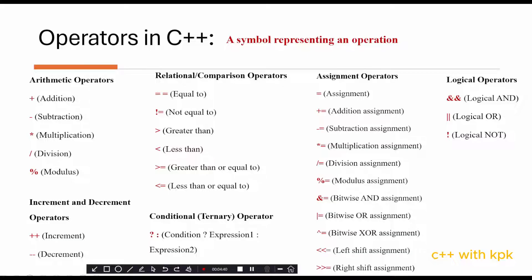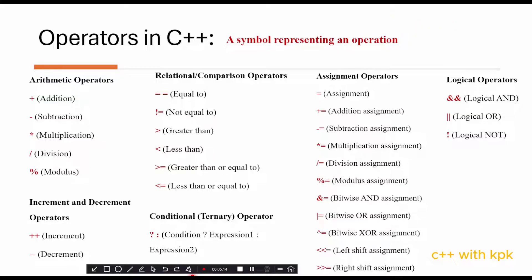Then we have the multiplication assignment, written as a *= b, which is the same as a = a * b. Similarly, the division assignment is a /= b, which is the same as dividing a by b, i.e., a = a / b. The value of the operation is stored back in the variable a.